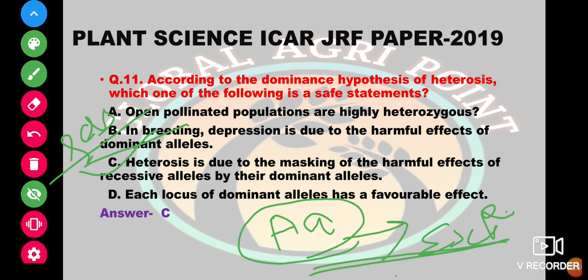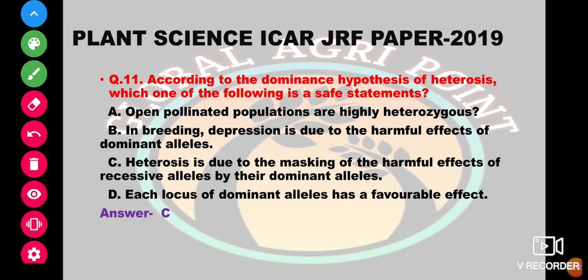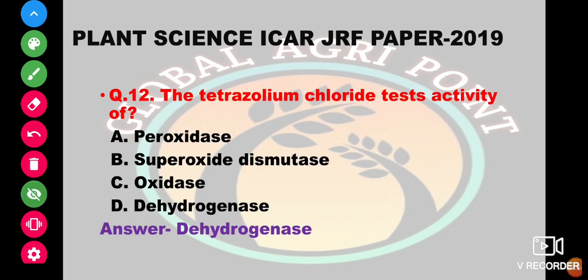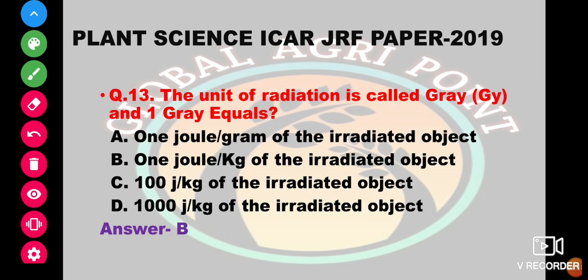Tetrazolium chloride test measures the activity of peroxidase, superoxide dismutase, oxidase, or dehydrogenase. The answer is dehydrogenase. The unit of radiation is called gray, and one gray is equal to one joule per kg of irradiated object. The answer is one joule per kg of irradiated object.